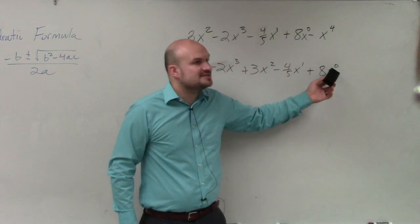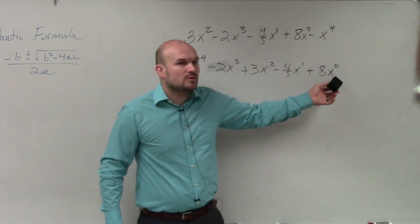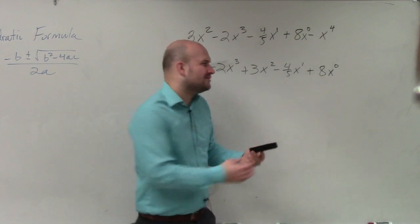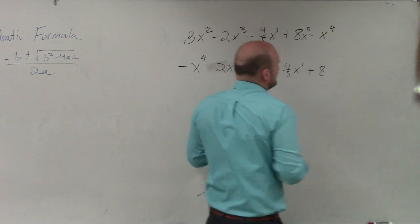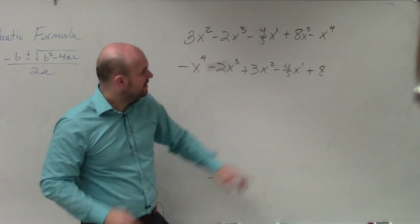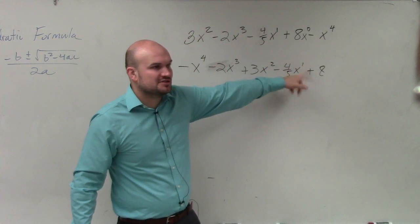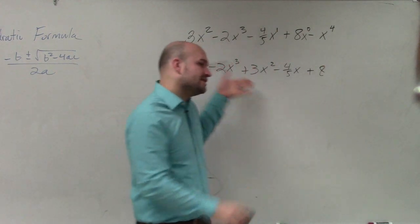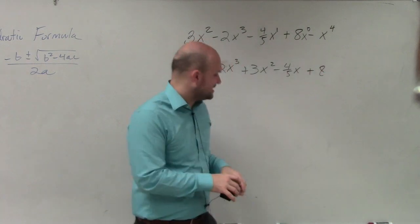But we know anything raised to the zero power is always? One. One times eight is? Eight. So we don't really write x to the zero. And then x to the first power is just going to be x, right? So we don't really write that one up there either. But I wanted to show that to you guys so you can see how it goes in that descending order.